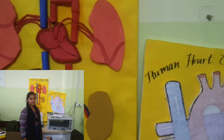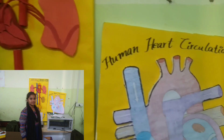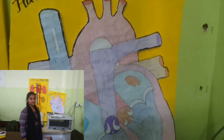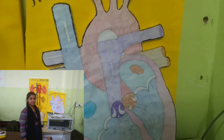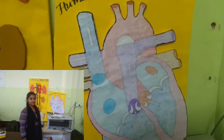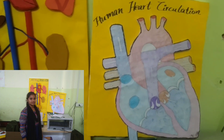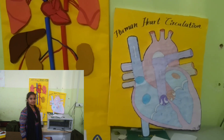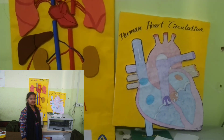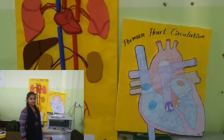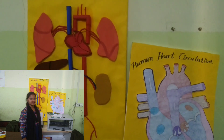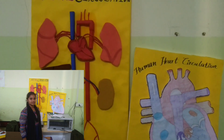The artery carries oxygenated blood and the vein carries oxygenated blood. The umbilical vein carries oxygenated blood to the liver and through the ductus venosus, the blood enters into the inferior vena cava.